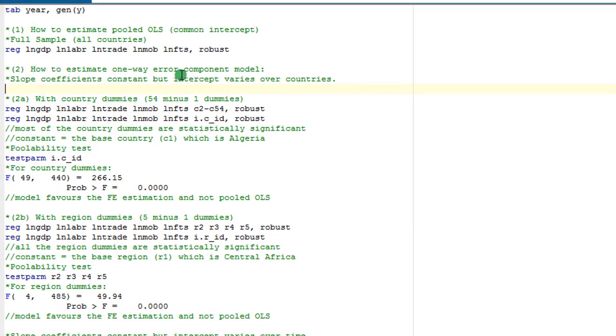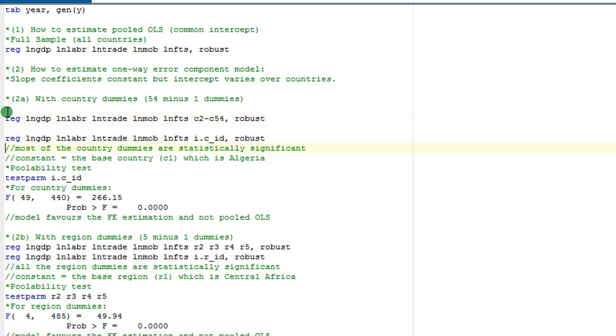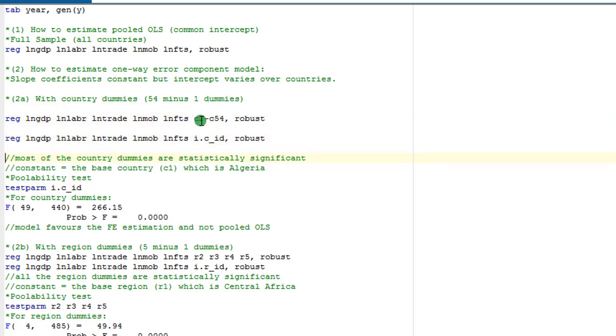Let us proceed to estimate a one-way error components model where we have a model with constant slope coefficients, but varying intercepts over countries. If you see my do file, there are two ways by which this can be done. I can either use the dummy variables that I showed you in my data editor or use what Stata calls factor variables.